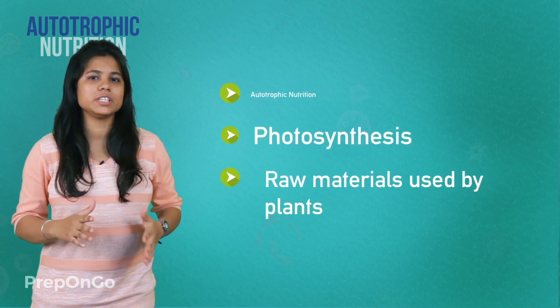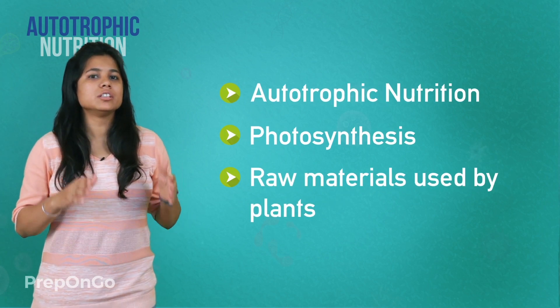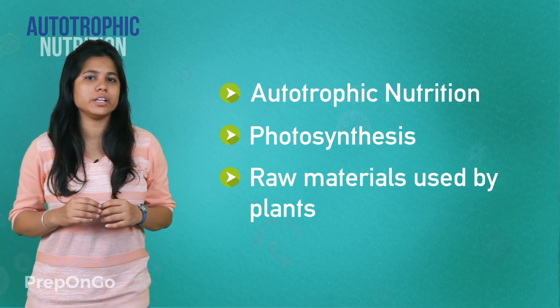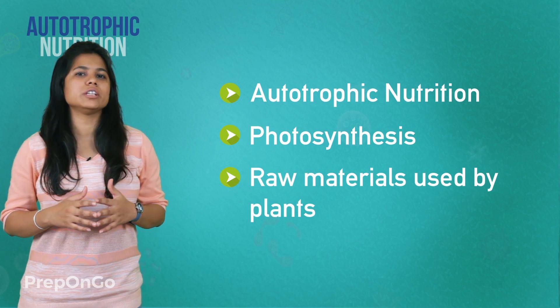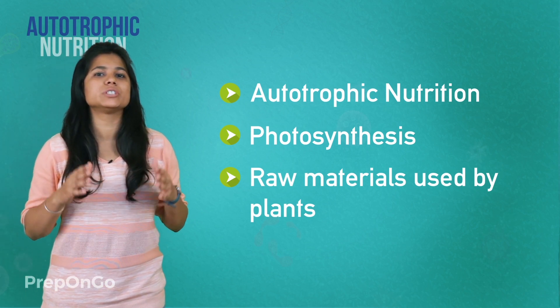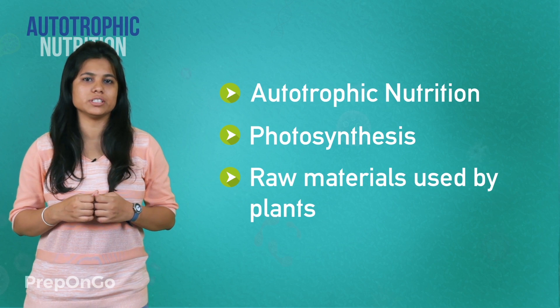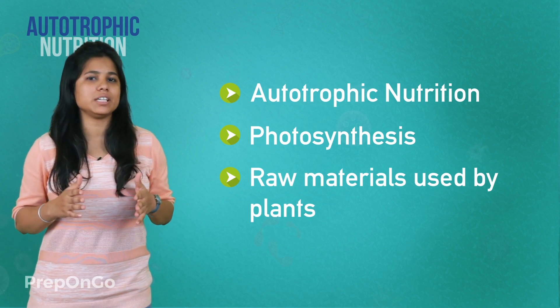So we have seen autotrophic nutrition, the photosynthesis process involved in it, the steps of photosynthesis, and the raw materials used by plants. We will see heterotrophic nutrition in the next video.